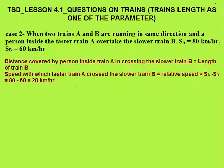Case 2 is when two trains are running in the same direction and a person is inside the faster train. In the first case the person was in the slower train, but now the person is in the faster train, which overtakes the slower train B. The speeds are again the same.